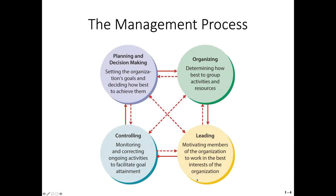The four managerial functions are: planning and decision making, organizing, controlling, and leading. Planning and decision making means setting the organization's goals and deciding how best to achieve them. Organizing means determining how best to group different activities and resources. Leading deals with only one type of resource — human resources — motivating members of the organization to work in the best interests of the organization. And controlling means monitoring and correcting ongoing activities to facilitate goal attainment.